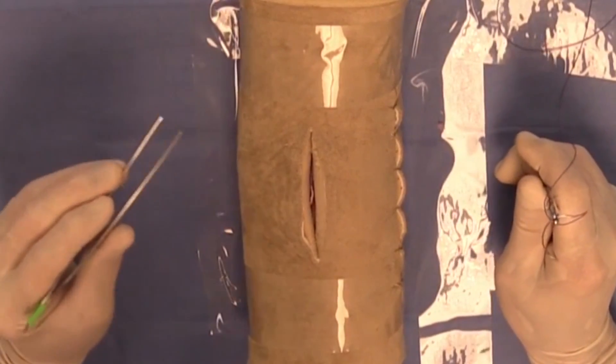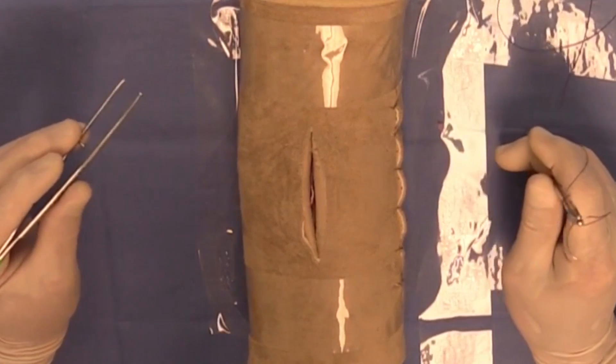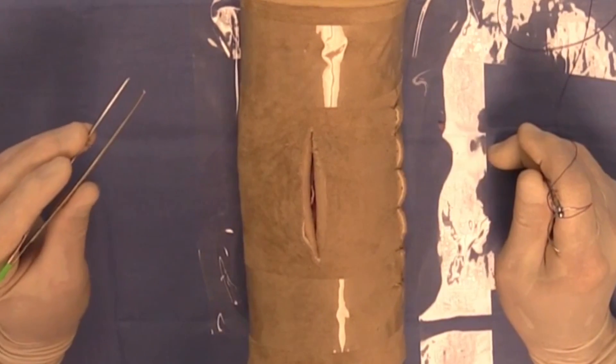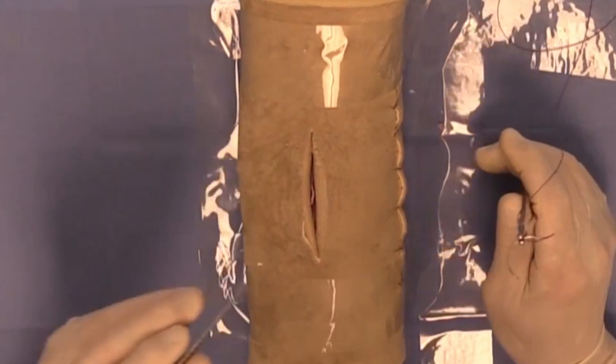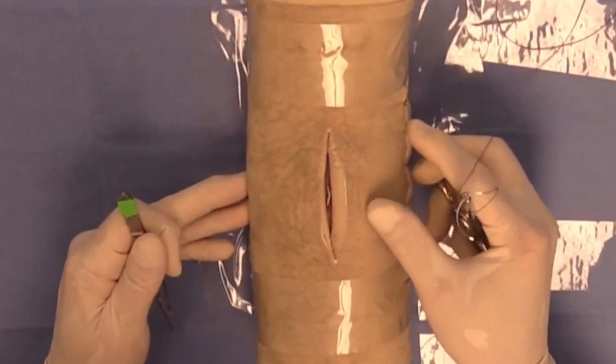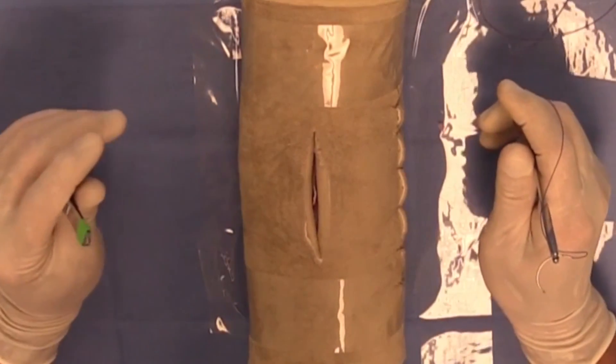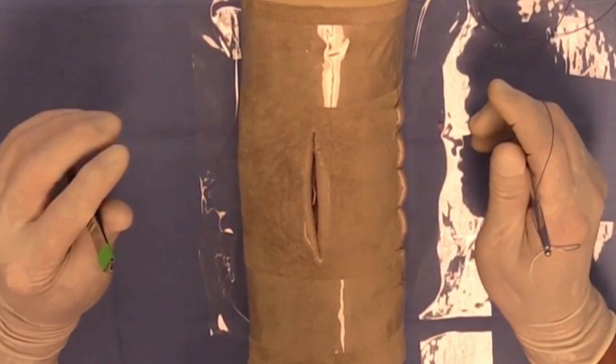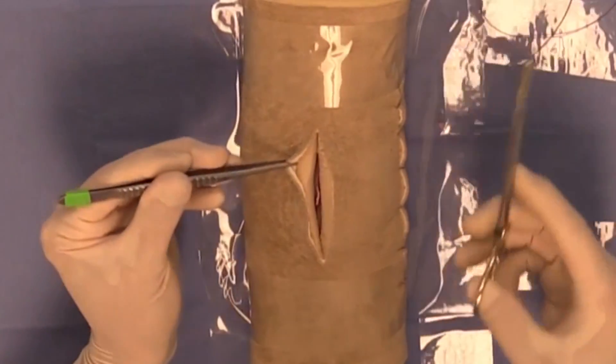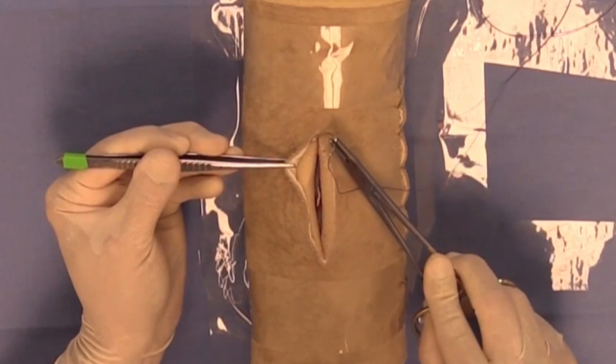There is always some controversy in trying to either understand or explain subcutaneous suture patterns versus subcuticular suture patterns. One of the problems we have in this course using the DAISY is that there really is no good way to demonstrate these subcuticular suture patterns because the subcuticular tissues really include the deep part of the dermis.